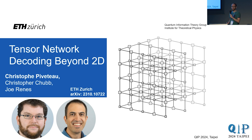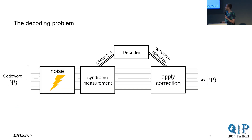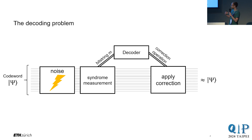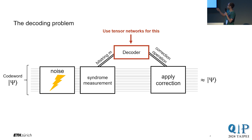Before I start, let's briefly recap what the decoding problem is in quantum error correction. We fix some quantum code, a code word undergoes some sort of noise, and in order to recover the quantum information, we do syndrome measurement on that noisy code word. This gives us a syndrome bit string which we pass as inputs to a classical algorithm called the decoder. That classical algorithm tries to figure out what correction operation we should apply to hopefully get back to our original code word. Today I'm going to focus on that classical decoding algorithm and show how you can use tensor networks to do this.